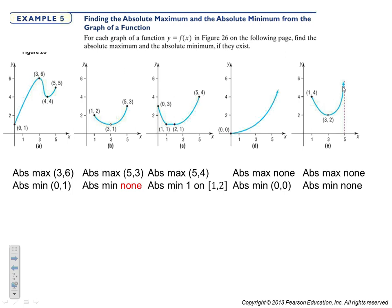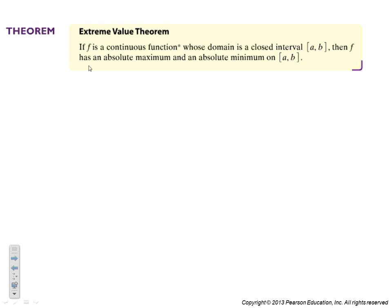Graph d has no absolute max because the line goes on forever to infinity, making it impossible to have one, but it does have an absolute min at (0, 0). Graph e goes on forever as we get closer to x = 5, so there is no absolute max, and the absolute min is at a hole, so there is no absolute min either. The Extreme Value Theorem states that if f is a continuous function on the interval [a, b], then f has an absolute min and an absolute max on that interval — meaning no holes.